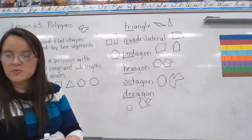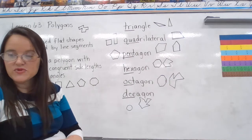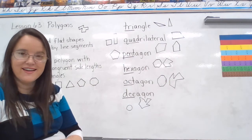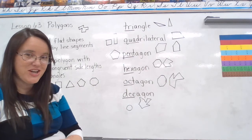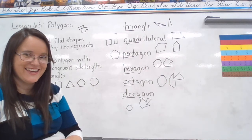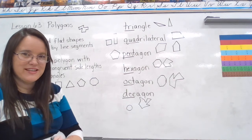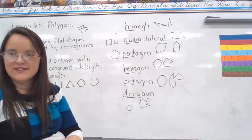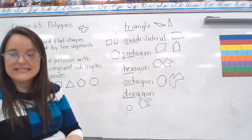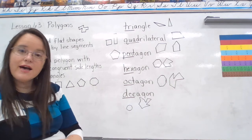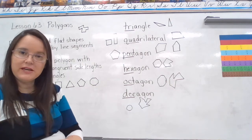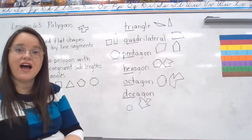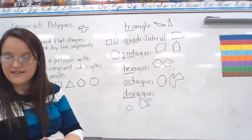Problem L says: what common street sign has the shape of the polygon in problem J? A stop sign — that big red sign that says stop — that is an octagon.